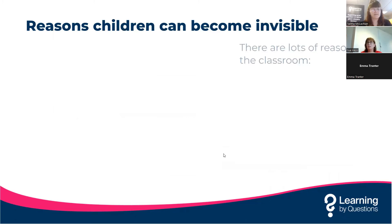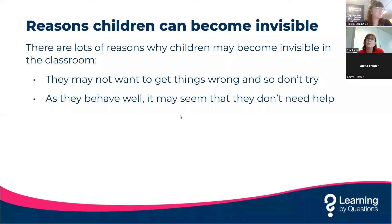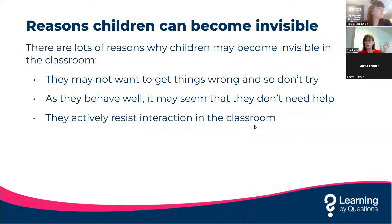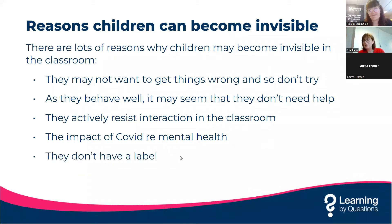Looking at reasons why children become invisible — there are lots of reasons. They're teenagers going through all that angst and just want to disappear. They may not want to get things wrong, so they don't even try. As they behave well, it may seem they don't need help. They may actively resist interaction in class — we've all seen those pupils who won't make eye contact when you ask a question. You'll all have seen the impact of COVID on the mental health of children. And sometimes if a pupil doesn't have a label, does that just mean they disappear?